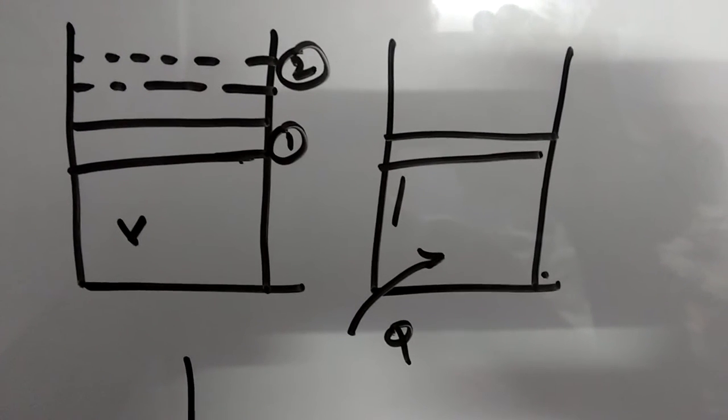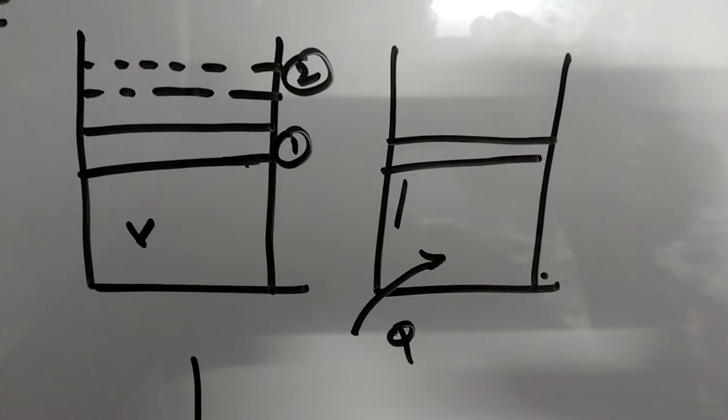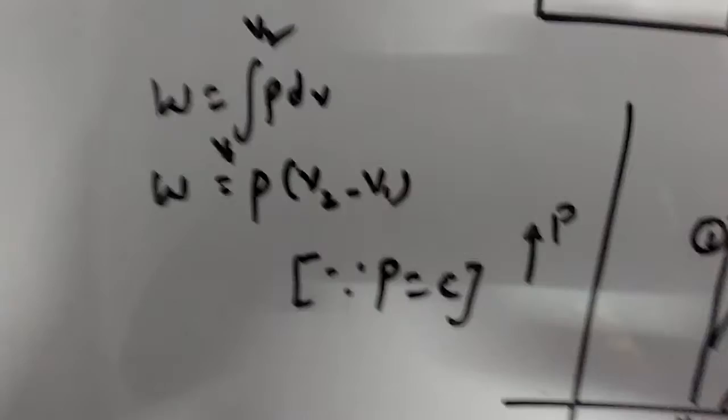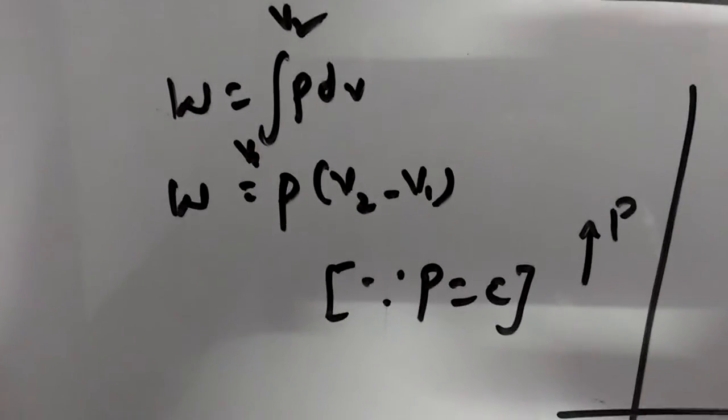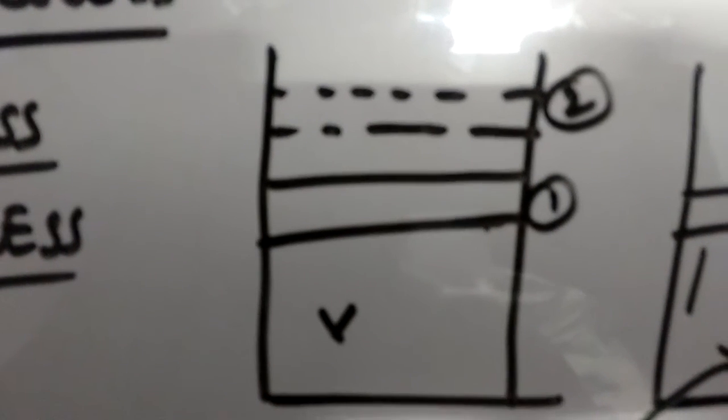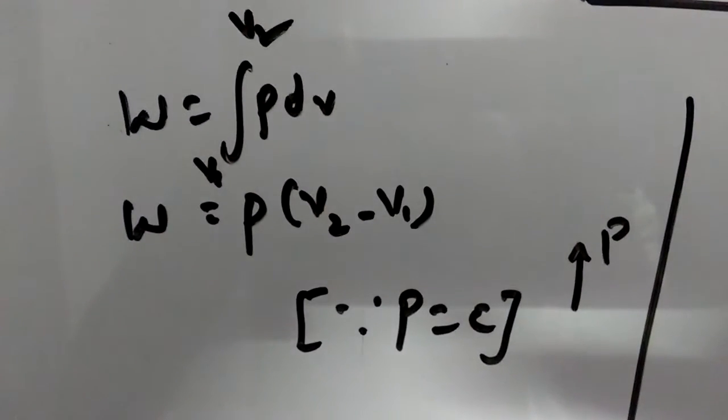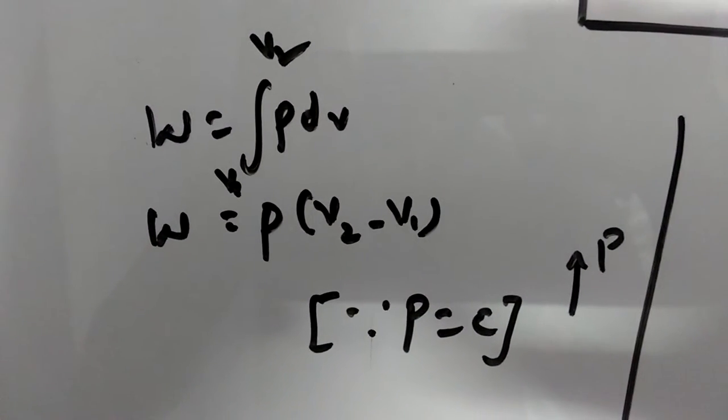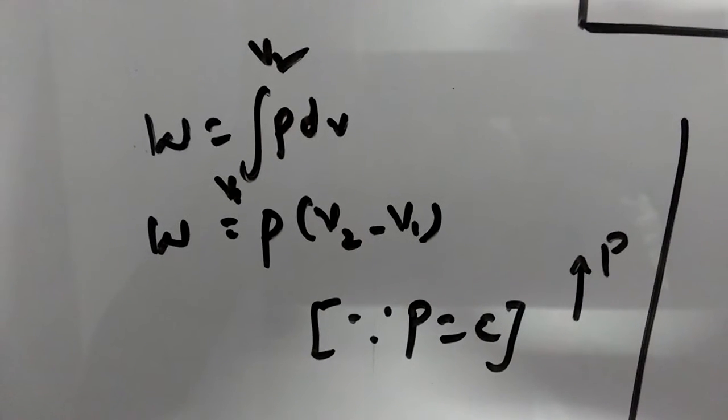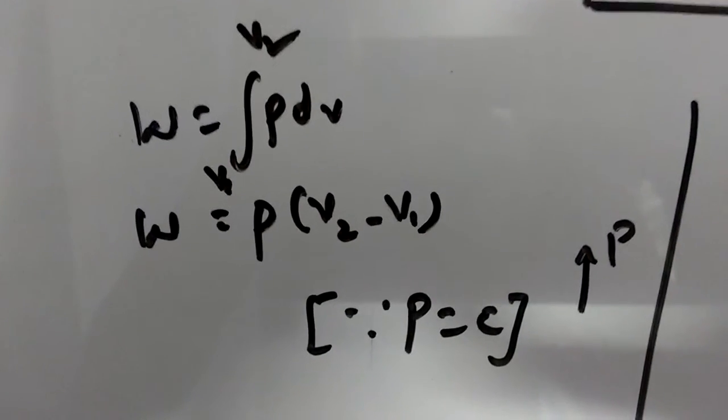From the equation of the non-flow work, W equals integral of PdV from V1 to V2, from state 1 to state 2. Like this, the piston is moving from state 1 to state 2. Therefore, PdV work equals P into V2 minus V1. As pressure is constant, we can take out the integral, and integrating dV within the limits V1 to V2, we get W equals P into V2 minus V1.